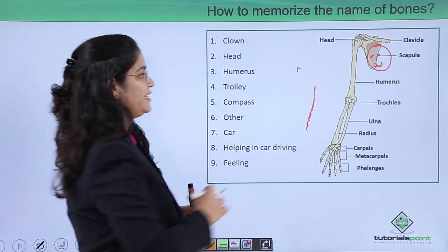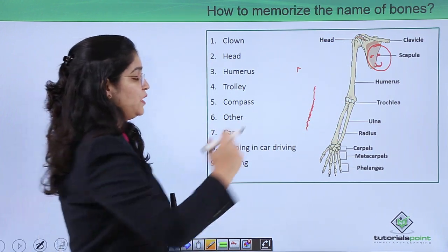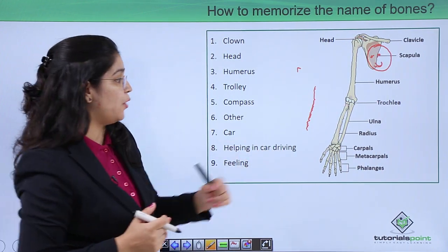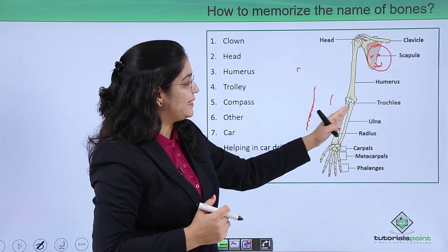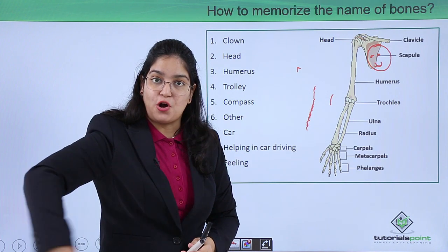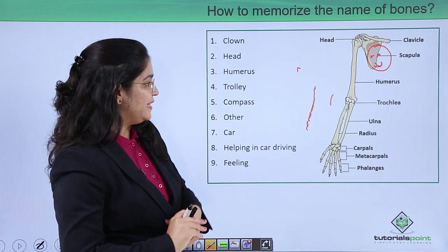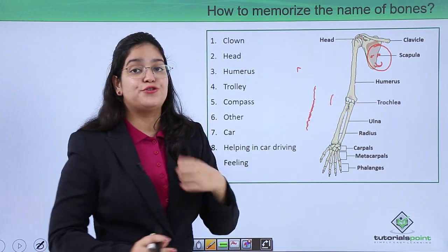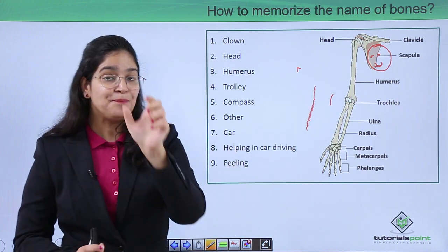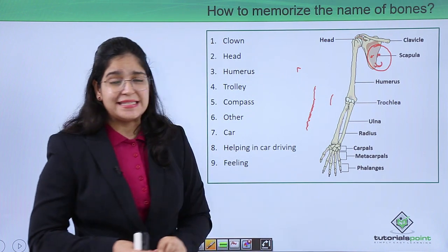The other two bones are the radius and the ulna. These are connected to the humerus through the trochlea. This trochlea works like a trolley or a pulley — hence this joint is called the trochlea.